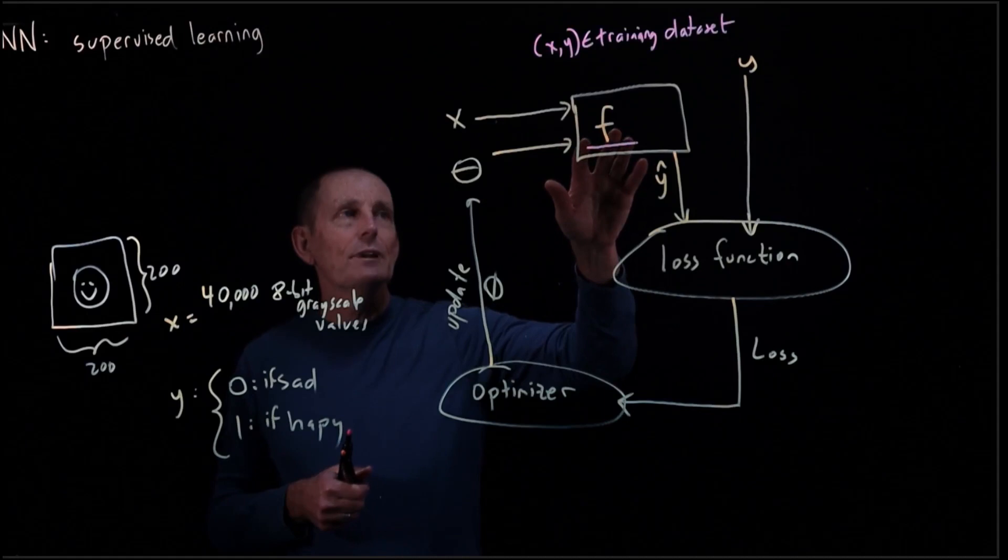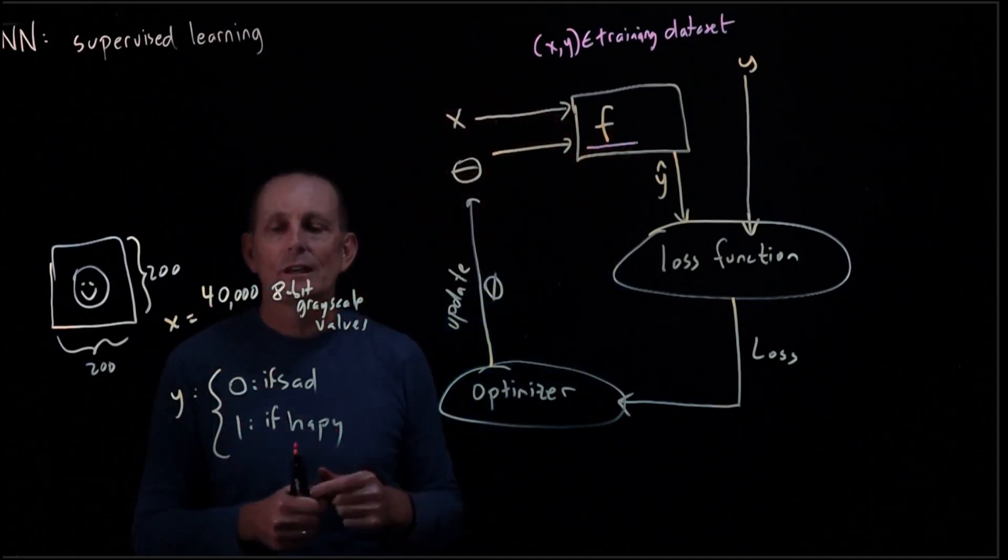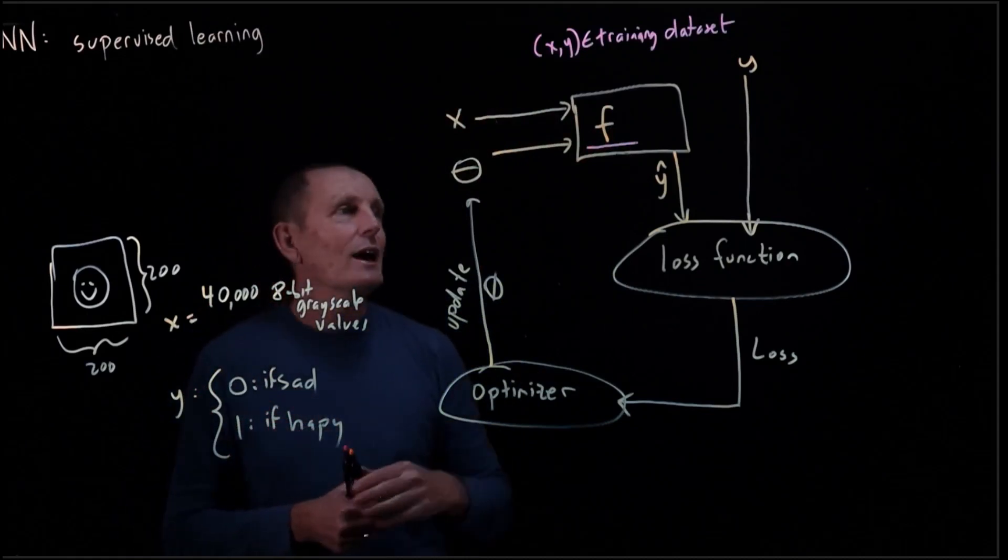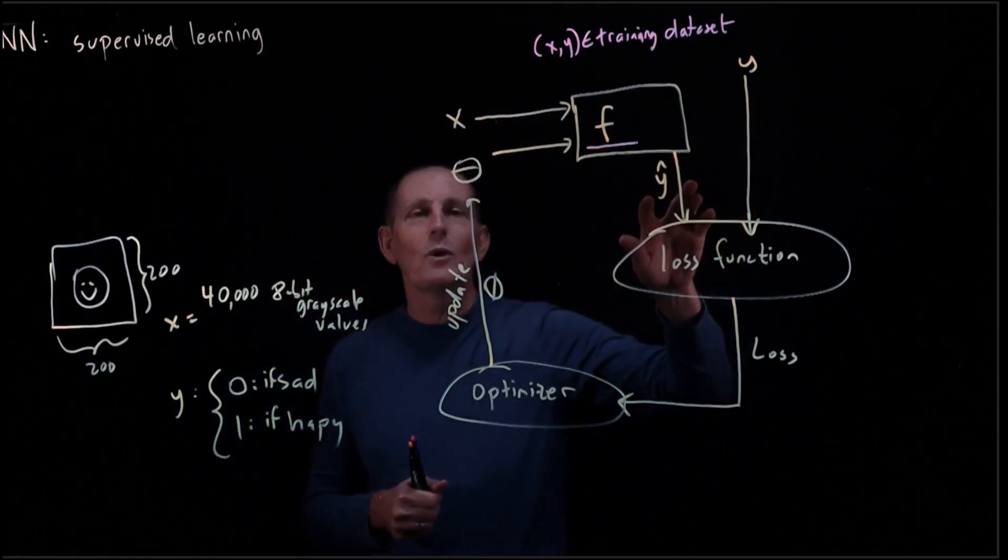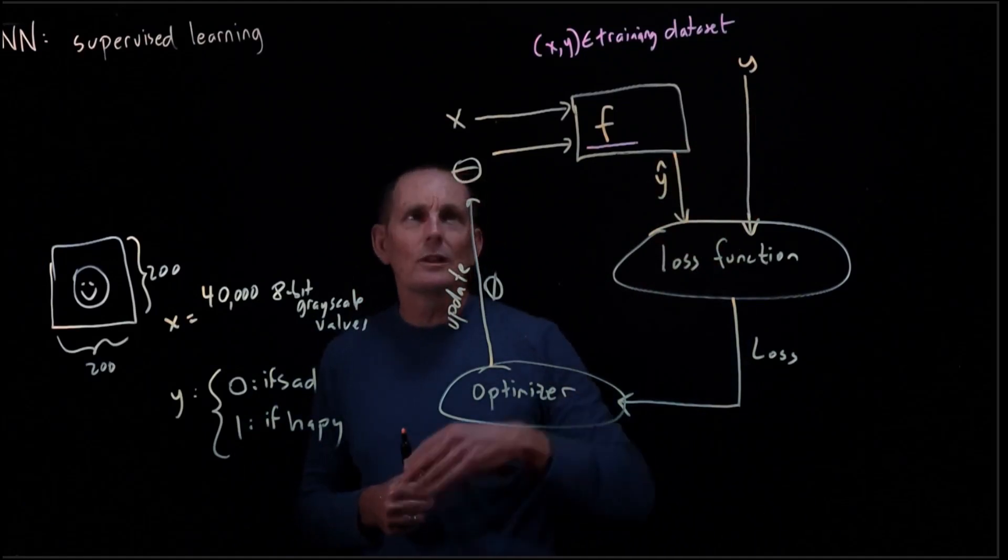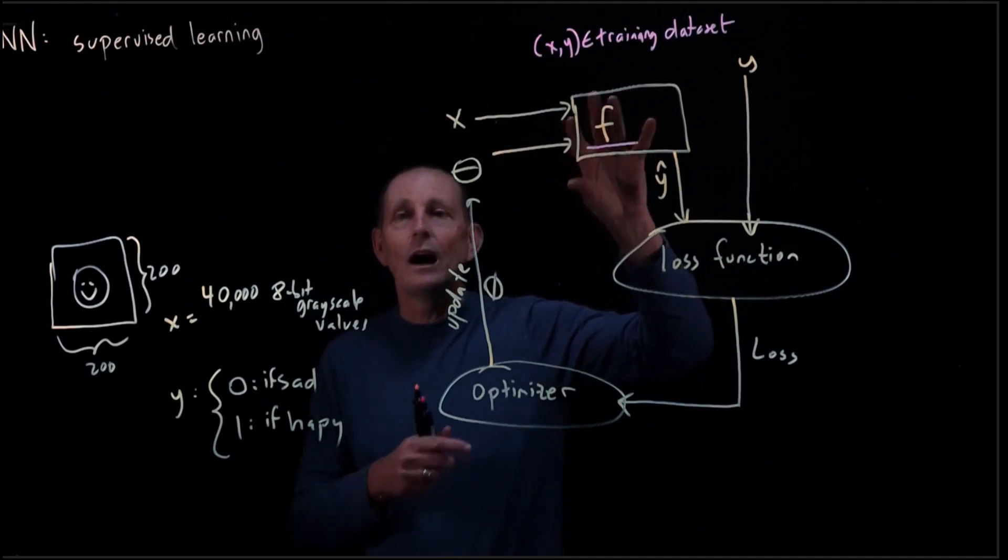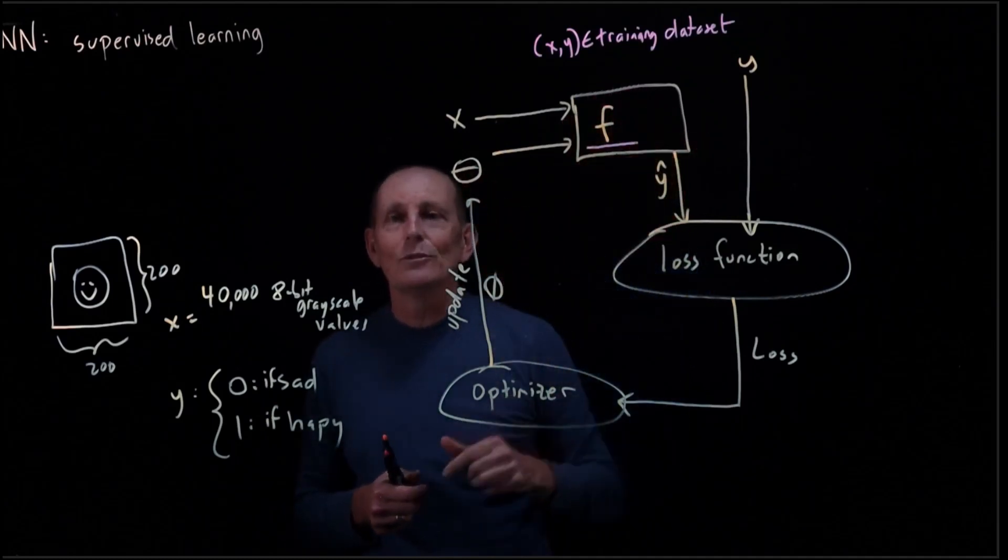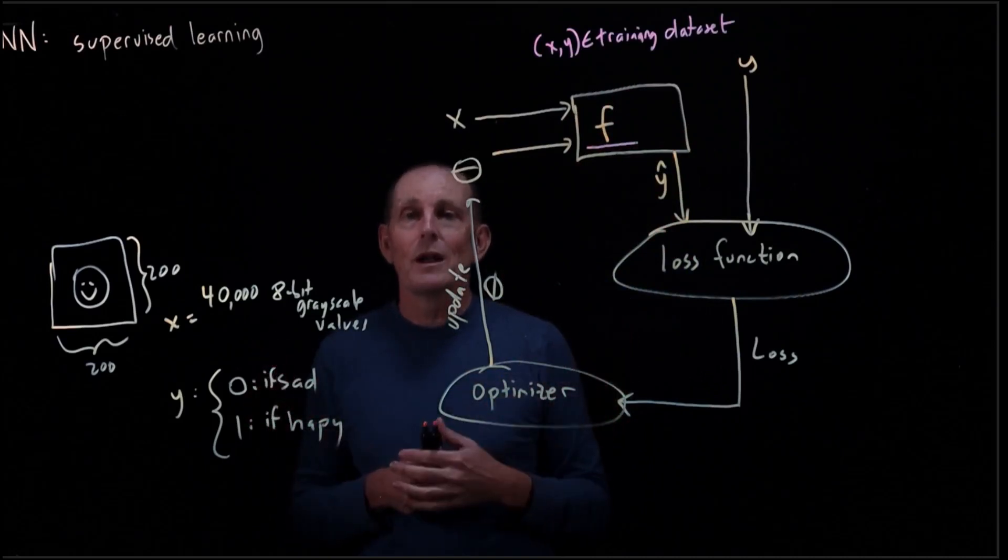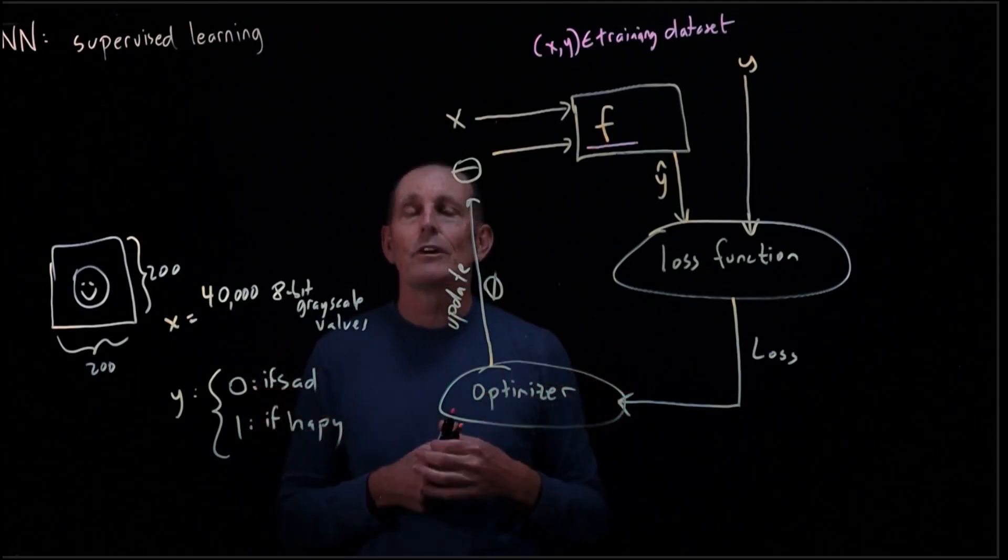So F, we know now, is going to be a function that takes as X, let's say 40,000 8-bit grayscales. Y-hat can be slightly different from the Y. We'll also get to decide what universe F is from. Eventually, this will be a complicated neural network, and theta will be a large number of parameters. Theta can be as large as millions or billions of parameters for very large neural networks.